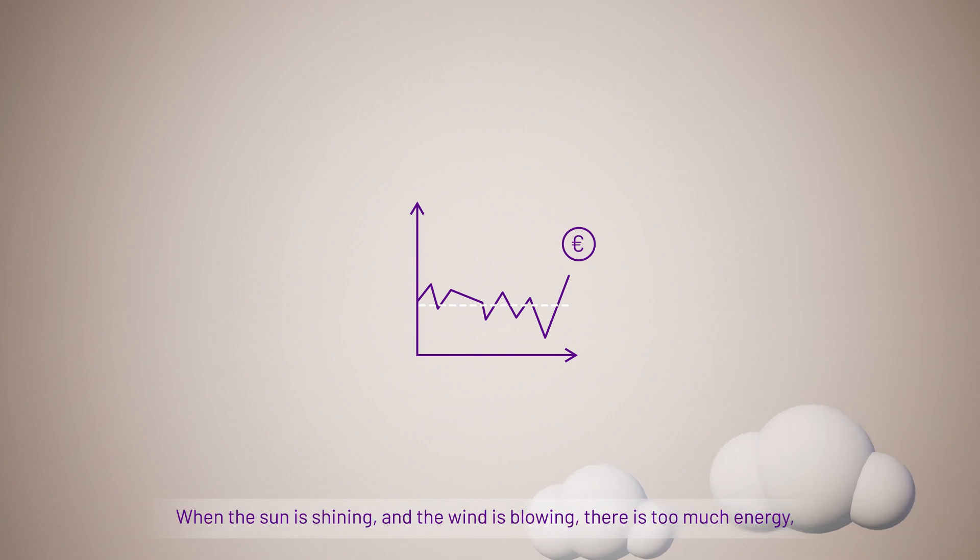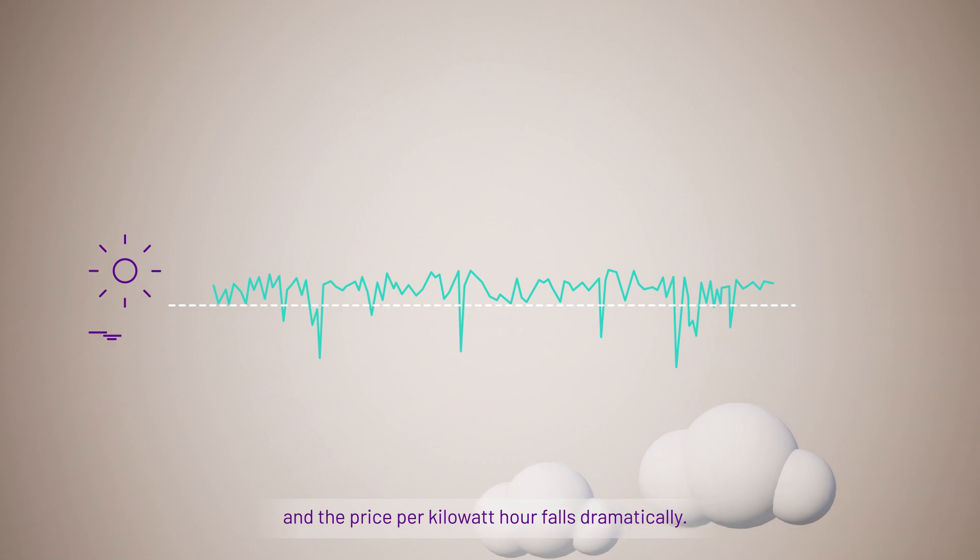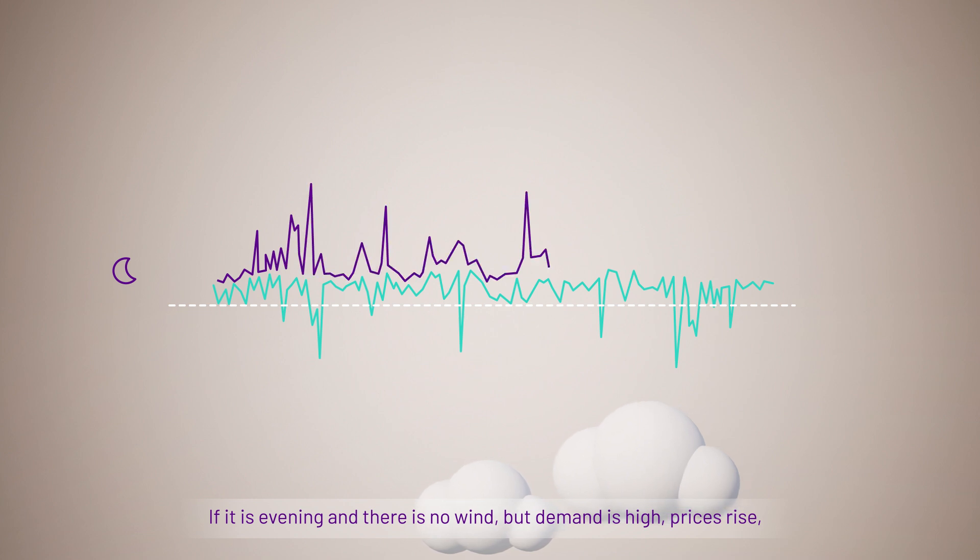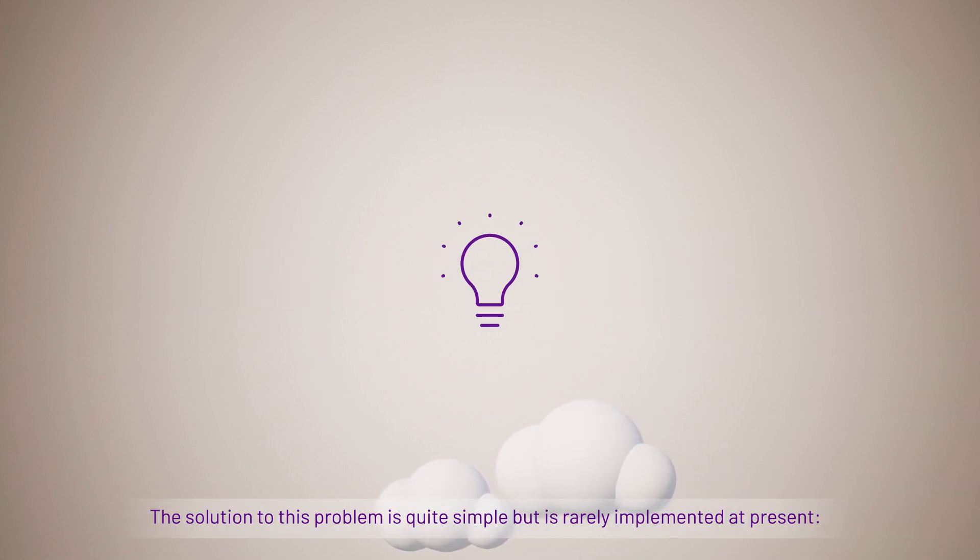When the sun is shining and the wind is blowing, there is too much energy and the price per kilowatt-hour falls dramatically. If it is evening and there is no wind but demand is high, prices rise, forcing gas or coal-fired power plants to step in. The solution to this problem is quite simple but is rarely implemented at present.